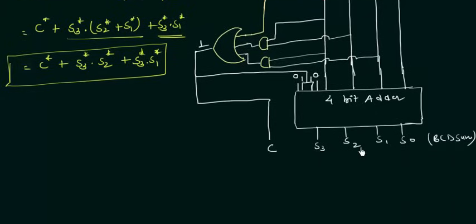In this way the BCD adder works. When A and B are added and the result exceeds 9, one of the three logic conditions goes high, the OR gate outputs 1, and 6 (0110) is added via the second adder to produce the correct BCD output. The key insight is deriving the logic for when to add 6.